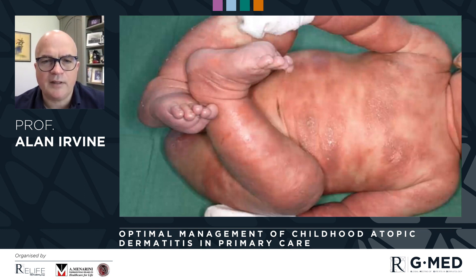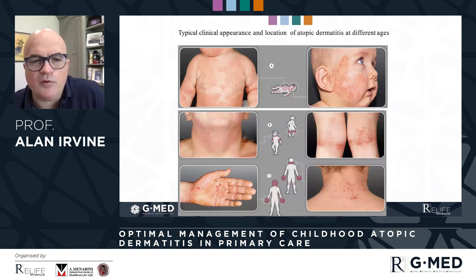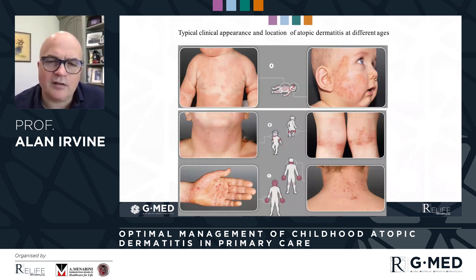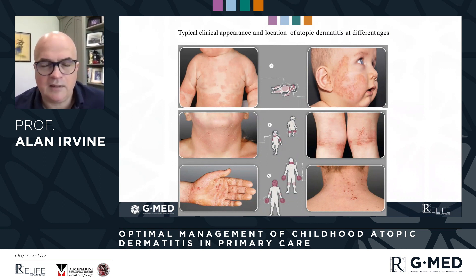This is a fairly typically severe infant. We're going to talk about how to manage this case shortly as we go through the presentation. A reminder that the appearances move around with age — we see a lot on the cheeks and on the general body in early life, and then we move to more flexural areas like the neck, the knee flexors, and the palms and soles throughout teenage years.